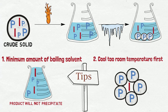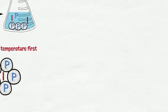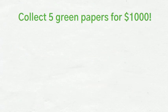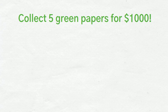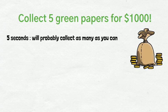Let's go over an example to help you understand this better. Imagine you are in a room filled with small papers in different colors. You are given 5 seconds to collect as many papers as you want. If you collect more than 5 green papers, you will get $1000. In this case, you will likely collect as many papers as you can, hoping most of them will be green papers.